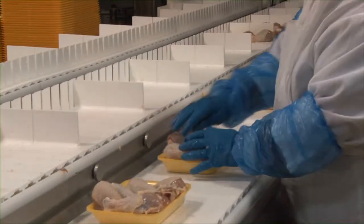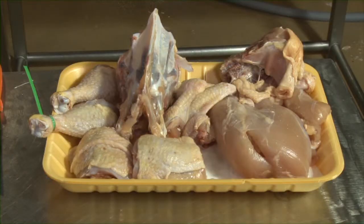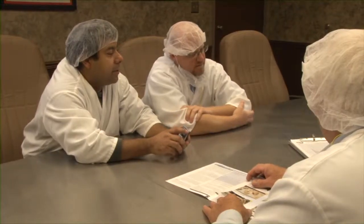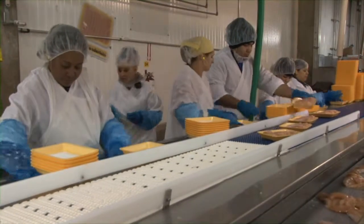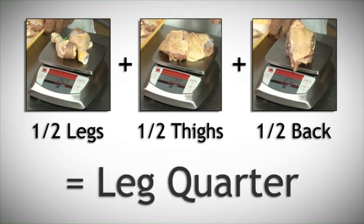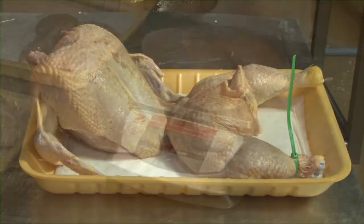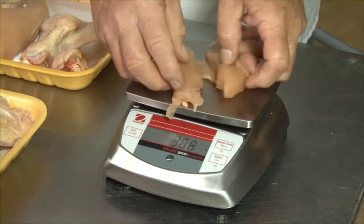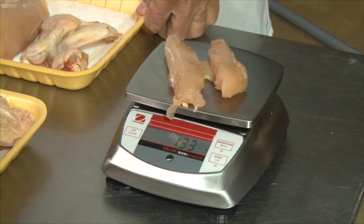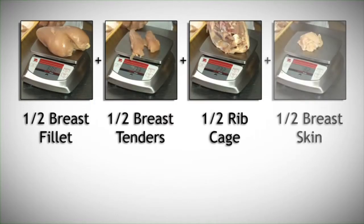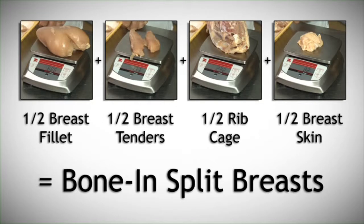Before processing the selected birds, it is important to determine what part weights and yield data you want to collect. For example, if your company only produces whole birds or bone-in cut-up chicken products, it doesn't necessarily make sense to debone the birds during the yield trial. However, if you foresee the need to obtain additional yield data for future product considerations, go ahead and debone the birds during the trial. You can always add the weights of different individual parts back together to calculate yields for different cuts, but you cannot break part weights down any further than how you determined to initially cut them during the trial. For example, if you need a yield number for bone-in split breasts and you have fully deboned your birds during the trial, you can always add back one half the weight of the breast fillet, breast tenders, rib cage, and breast skin. However, if you make the decision to only cut split breasts during the yield trial, you cannot then go back and calculate what the deboned fillet yield would be.